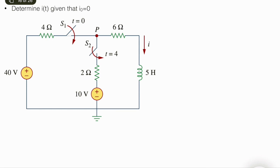In this video I will show another example on step response in RL circuits. As you can see in this problem we have two switches, S1 and S2, and they are activated at different times. So in this kind of problem the important point is dividing time instances when the switching changes.